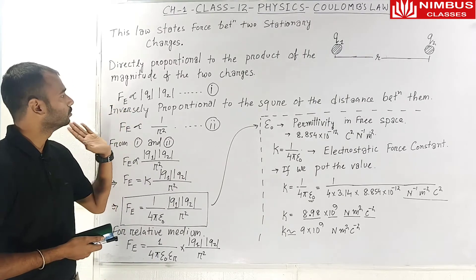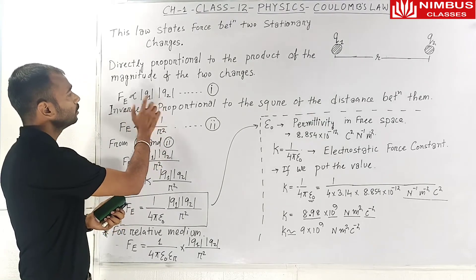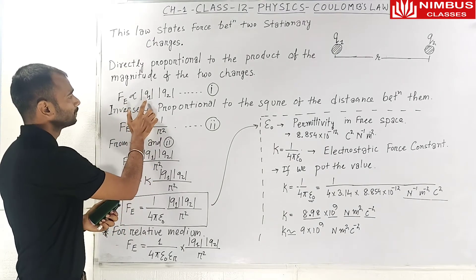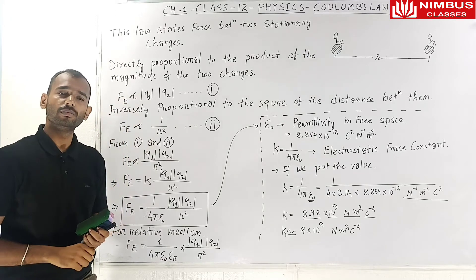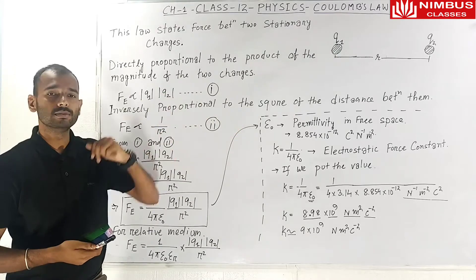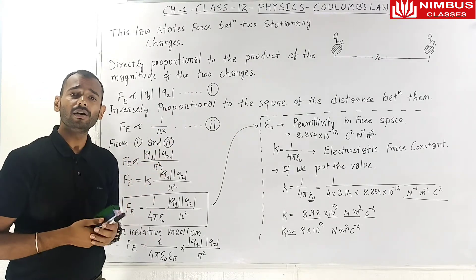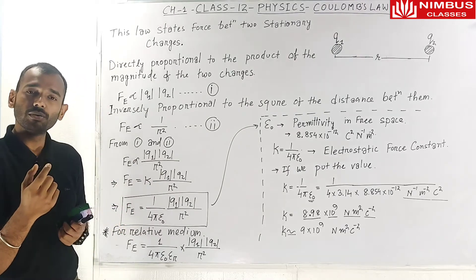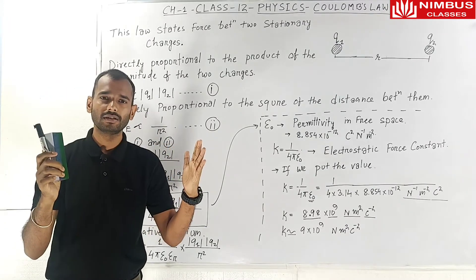The electrostatic force — also called the Coulomb force — is directly proportional to the product of the magnitude of the two charges, and inversely proportional to the square of the distance between them.